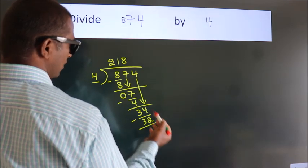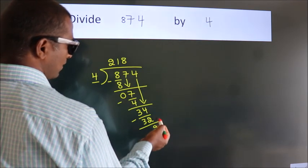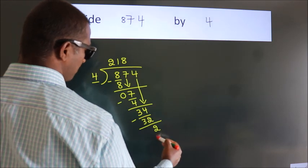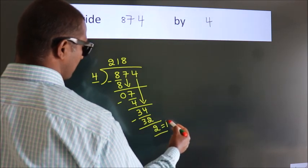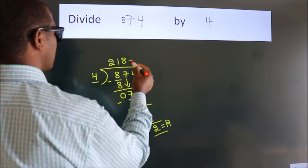After this, no more numbers to bring down. So we stop here. This is our remainder. This is our quotient.